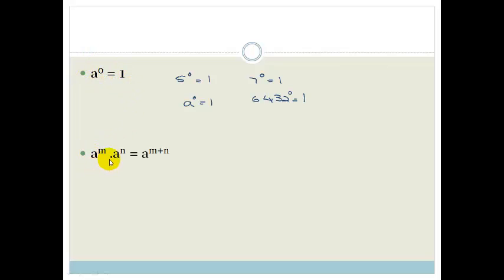The next rule that I'm reminding you about is a to the m times a to the n is equal to a to the m plus n. So what does that mean? Let's do an example. So an example of that would be a cubed times a squared. And the way we work that out, to just prove it to you again,